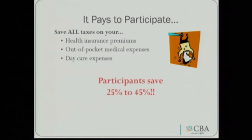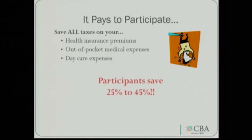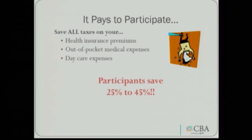It really does pay to put money into these pre-tax benefits that you're already spending out of pocket anyway. You can save taxes on your health insurance premiums — which is automatic — but also save money on the out-of-pocket medical expenses that you and your family members are going to incur. And of course, save money on those daycare expenses. There's a huge tax savings on daycare because you can elect up to a full $5,000. Most participants save between 25% and 45% — a huge savings at point of service.